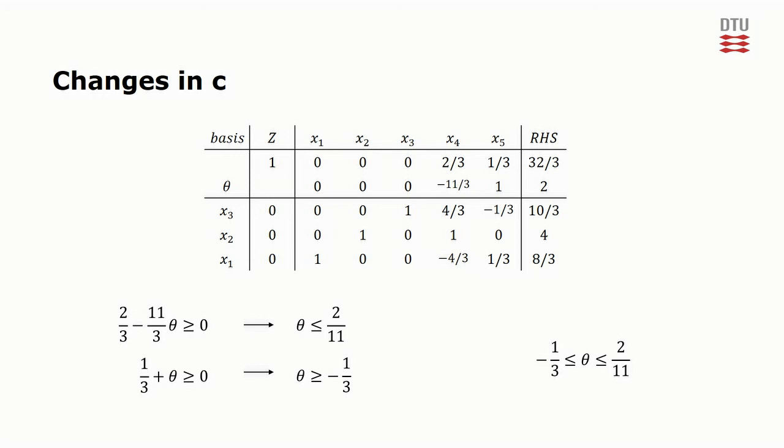Since we do not want to examine negative values of theta for this test, we should only check what happens when theta goes beyond 2 elevenths. When this is the case, we need to make a primal simplex iteration with x4 as the entering variable and x3 as the exiting variable.